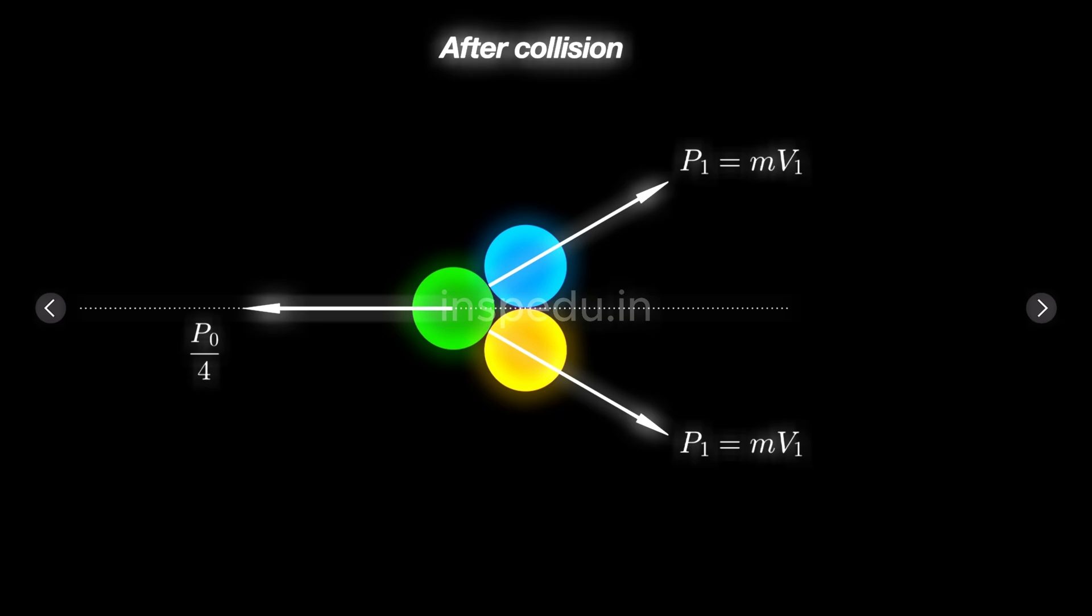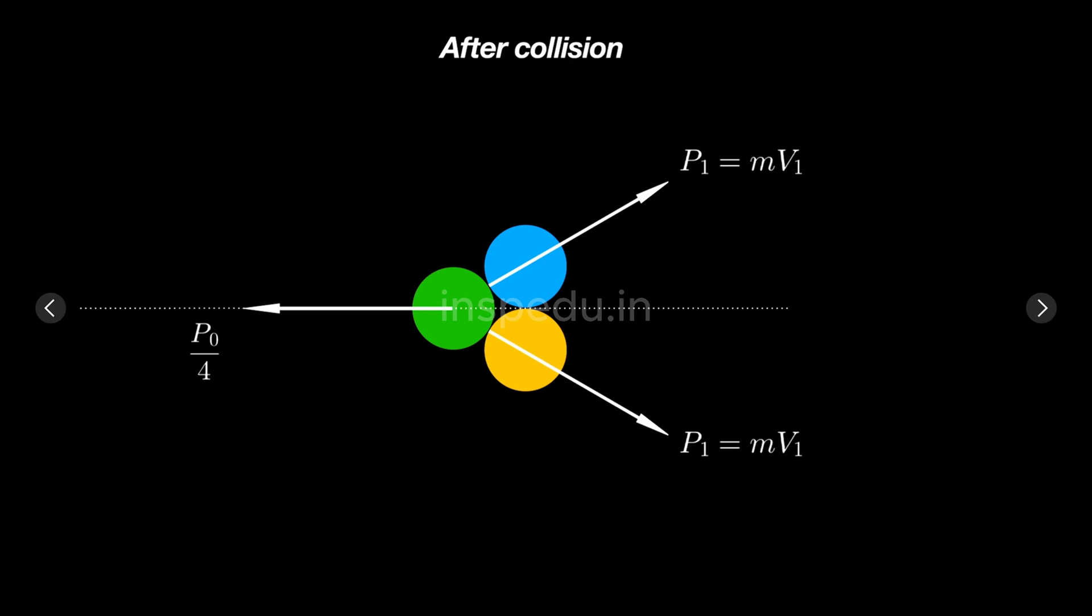we see that balls B and C are moving symmetrically with outgoing momentum P₁. Let's call these corresponding velocities as v₁, and it retraces back with one-fourth of the momentum. So if initial speed is v₀, initial momentum is mv₀, and it is returning back with one-fourth, that means outgoing velocity of ball A is going to be v₀ by 4.